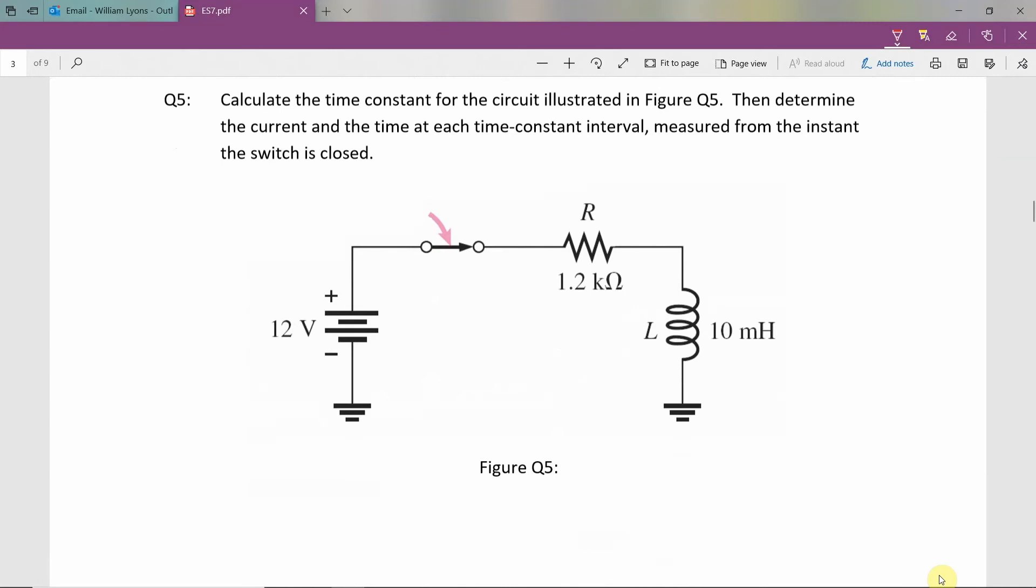Here we are given a circuit with a DC power supply, a resistor, and an inductor, and we've been asked to calculate the time constant for the circuit shown. We are then asked to determine the current and the time at each time constant interval measured from the instant the switch is closed.